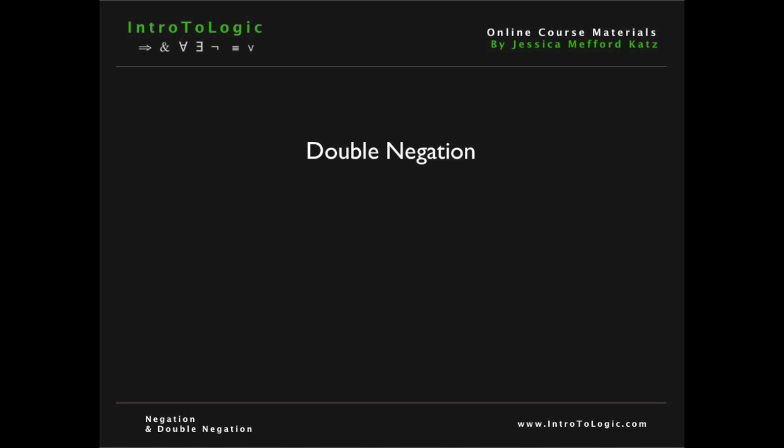Double negation is technically called a rule of replacement. According to double negation, we can add or take away any two negation signs from a sentence or a component of that sentence. So for example, if I have the sentence P as my first premise, double negation allows me to use the first premise to get NOT NOT P. And we'd write 1DN, and this would be the rule that we used, double negation, in the line.